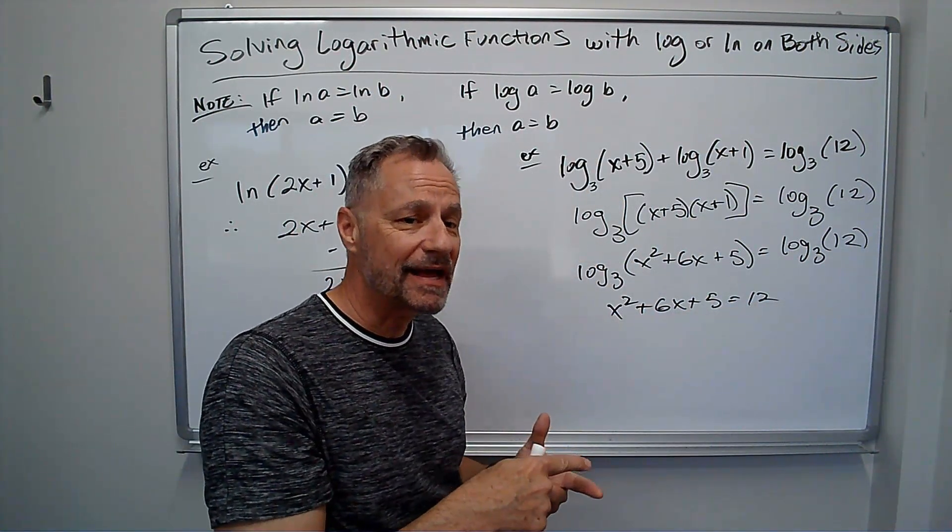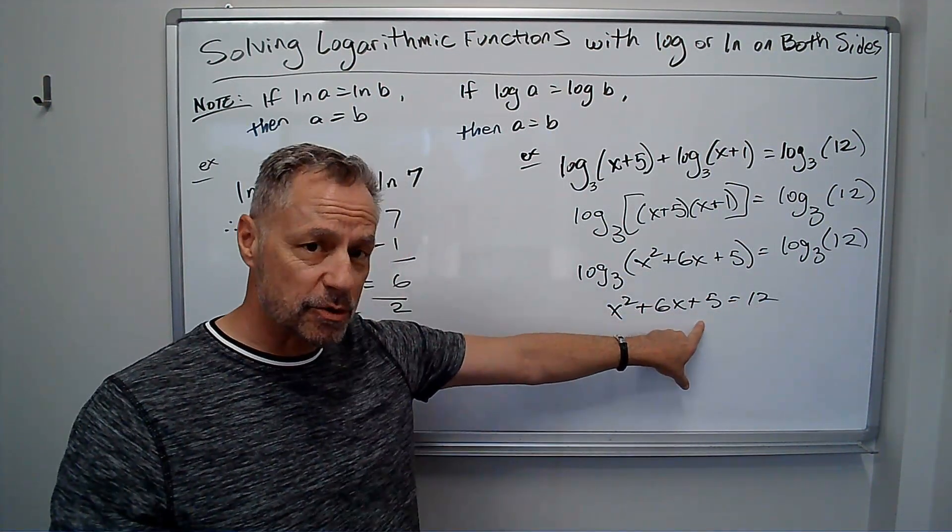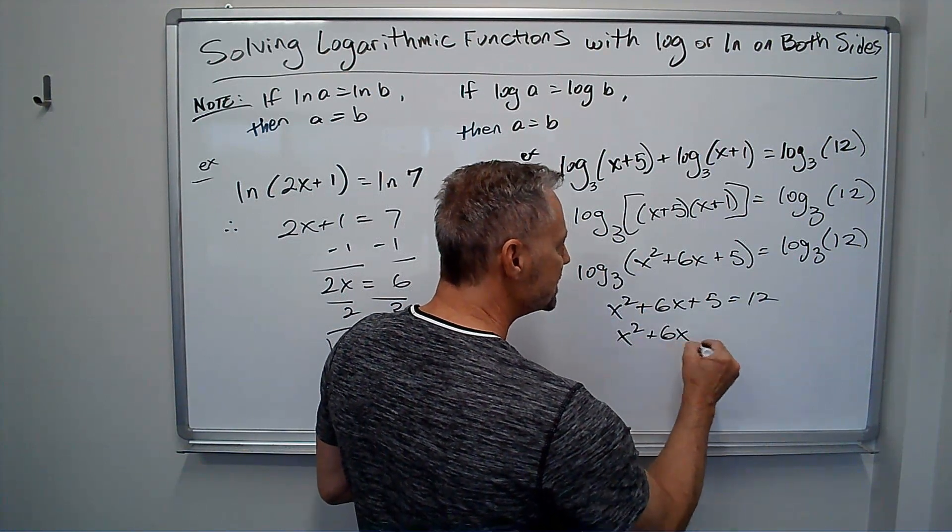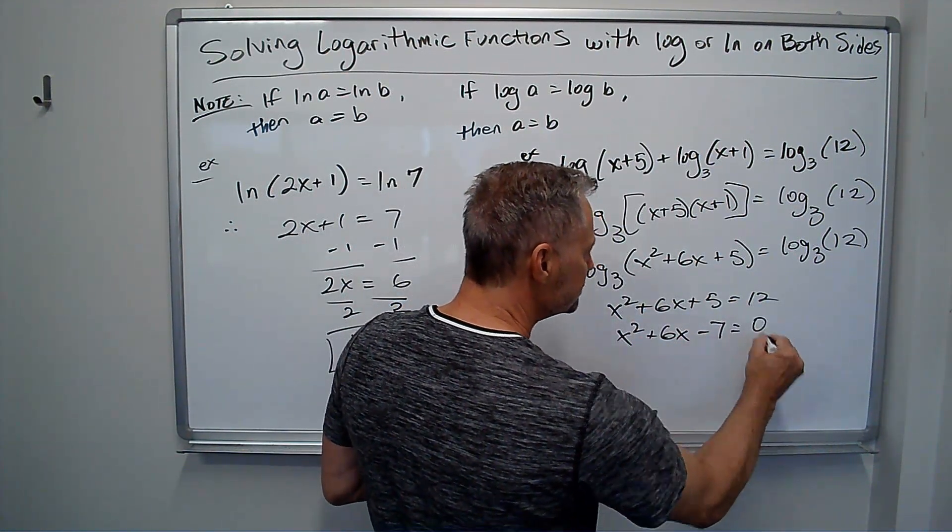Now I need to solve that. And I'm running out of room, so I'll kind of combine some steps together. I'm going to subtract 12 from both sides. So I've got x squared plus 6x. Well, 5 minus 12 is negative 7 equals 0.